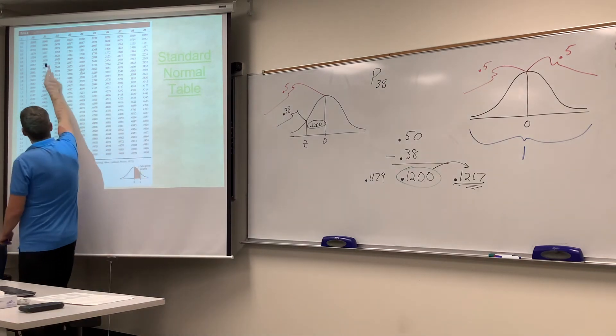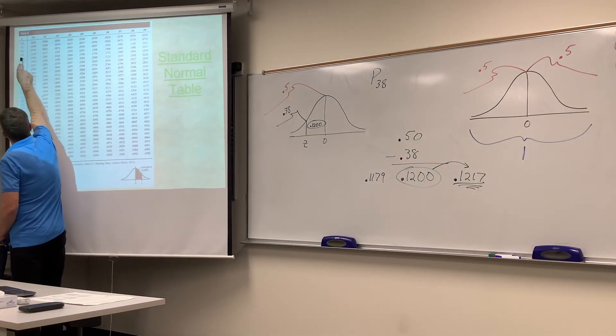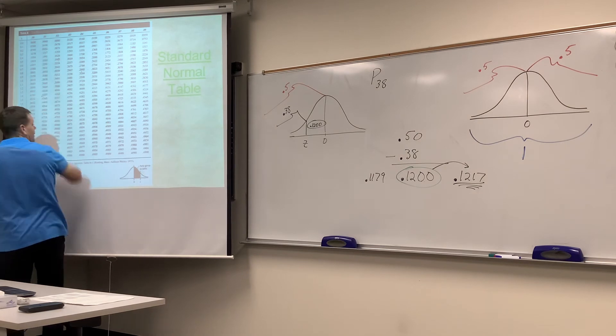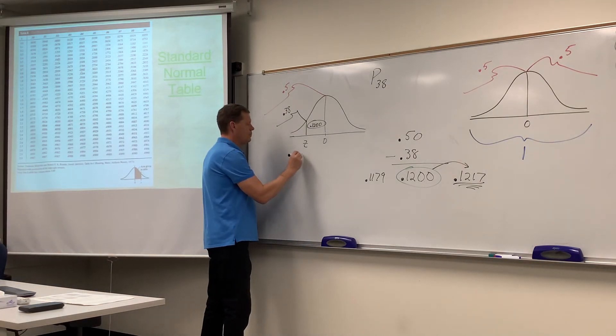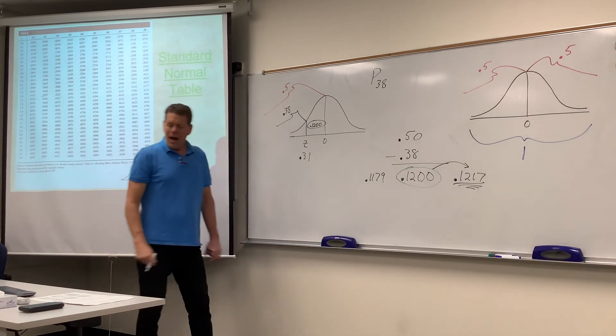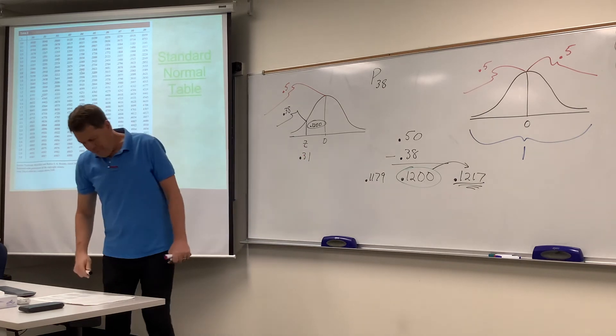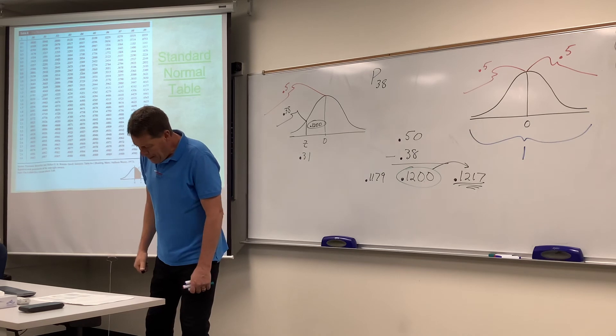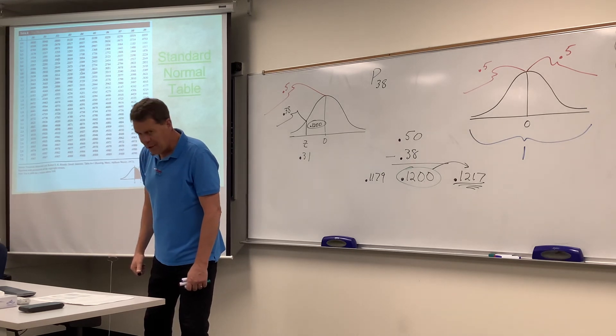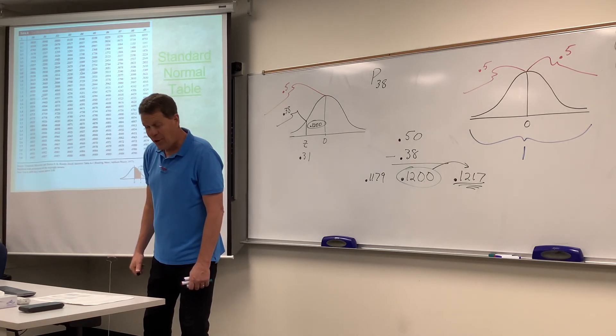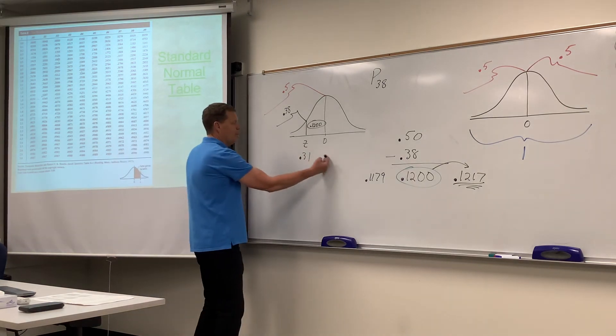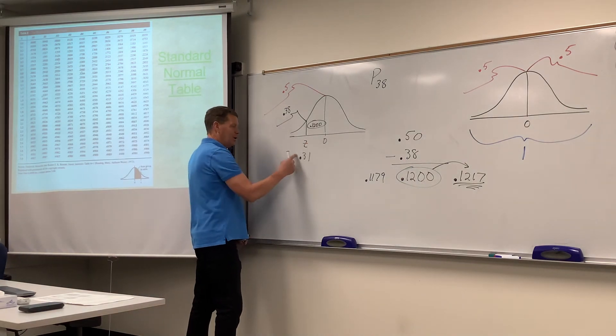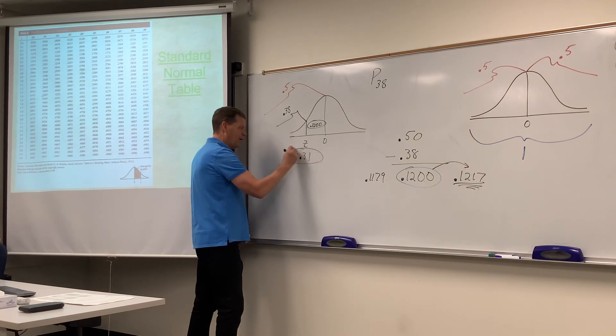So .1217 lines up with .31. I hope you don't circle that and walk away from it. I truly hope that you would understand Mr. Sourdough Bread would have to count that wrong if you walk away from it. Because it's below the mean. Below zero. It's negative. Put a negative on it.